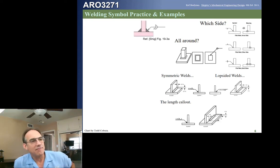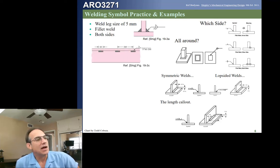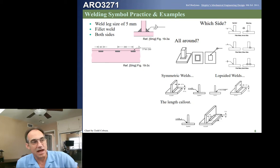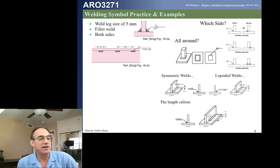This is a back-to-back 5-millimeter fillet weld. The callout here has no size shown but indicates the weld occurs on both the near and far side. The welds are 60 millimeters long and spaced at 200 millimeters. The first weld is on the far side, 60 mm long; then 200 mm later there's another 60 mm weld on the near side. We know this because those two symbols are staggered, not on top of each other.